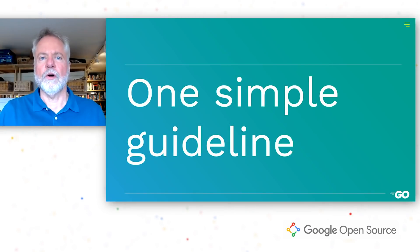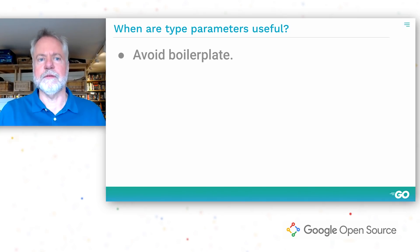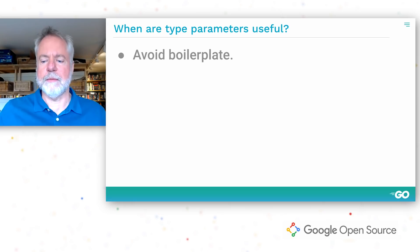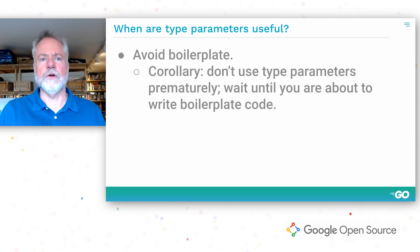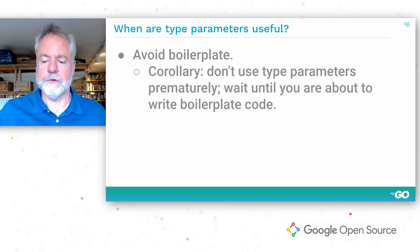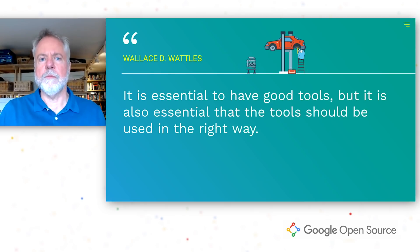In closing, this whole discussion can be reduced to one simple guideline: if you find yourself writing the exact same code multiple times where the only difference is that the code uses different types, consider whether you can use a type parameter. Another way to say this: avoid using type parameters until you notice that you're about to write the exact same code multiple times. Thanks for listening, and I hope you will all use generics in Go wisely and well.